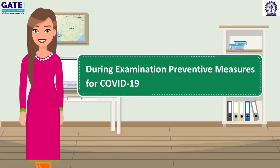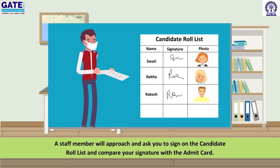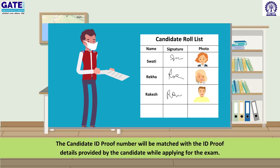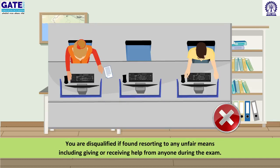During examination preventive measures for COVID-19, a staff member will approach and ask you to sign on the candidate role list and compare your signature with the admit card. The candidate ID proof number will be matched with the ID proof details provided by the candidate while applying for the exam. You are disqualified if found resorting to any unfair means, including giving or receiving help from anyone during the exam.